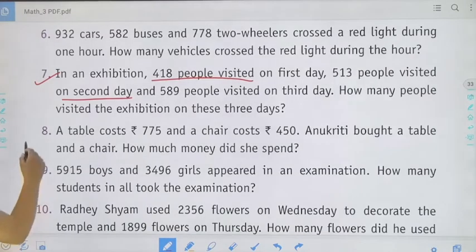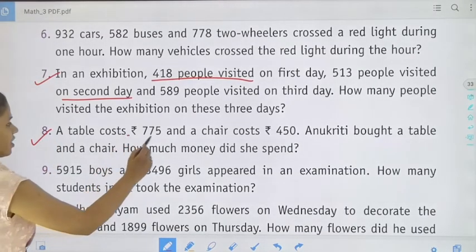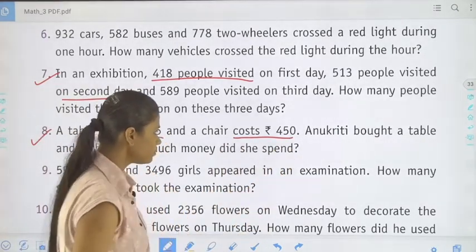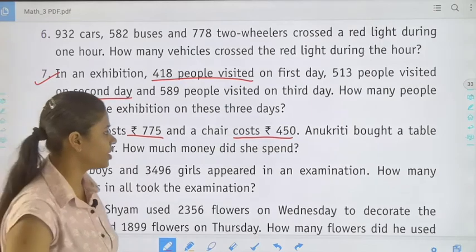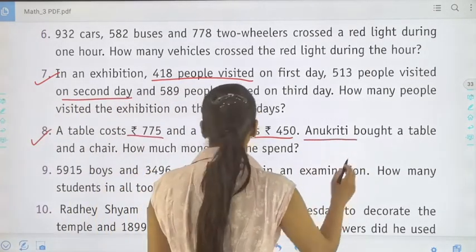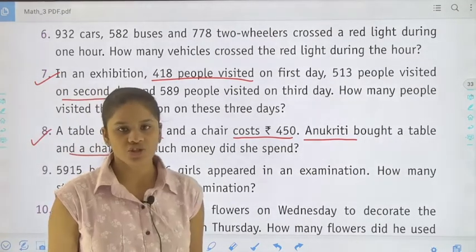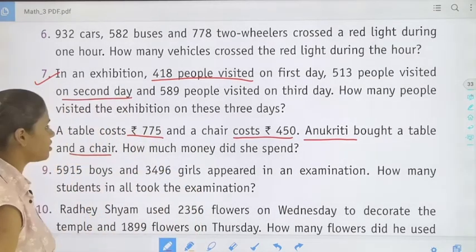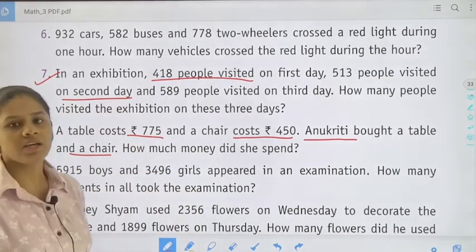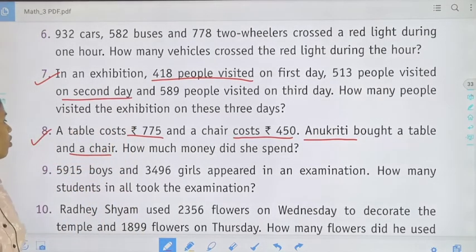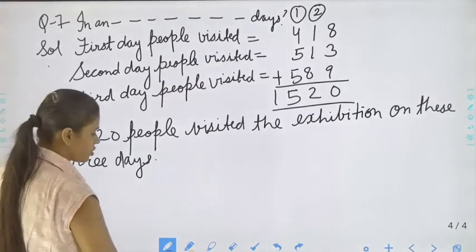Move to the next question. A table costs Rs. 775 and the chair costs Rs. 450. Anukriti bought a table and a chair. How much money did she spend? Anukriti bought a table and chair which cost 775 and 450, so how much money did she spend to purchase the chair and table? Now move to the next question, that is question number 8.